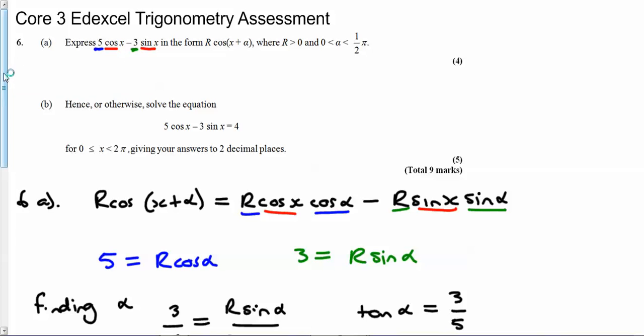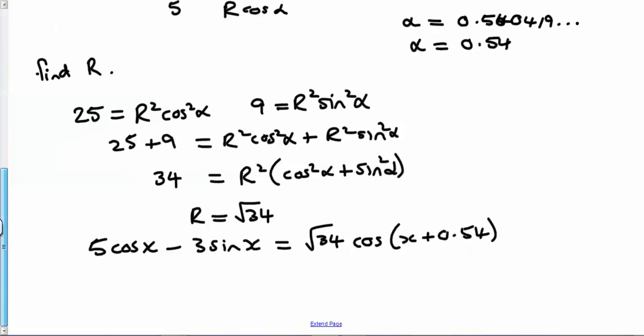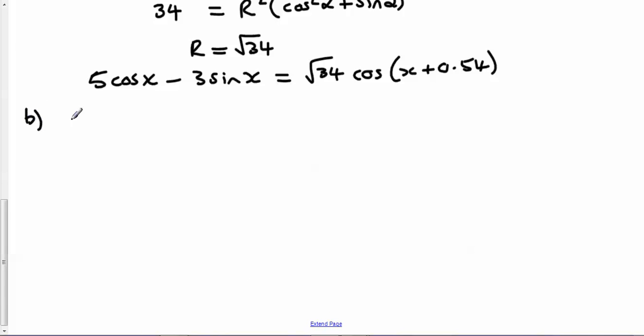Hence or otherwise—meaning use part a, that would be the quickest way to do it—you can solve that equation equal to 4. So actually what we can look at for part b is that this, our new expression, is equal to 4. And if we do a bit of rearranging...